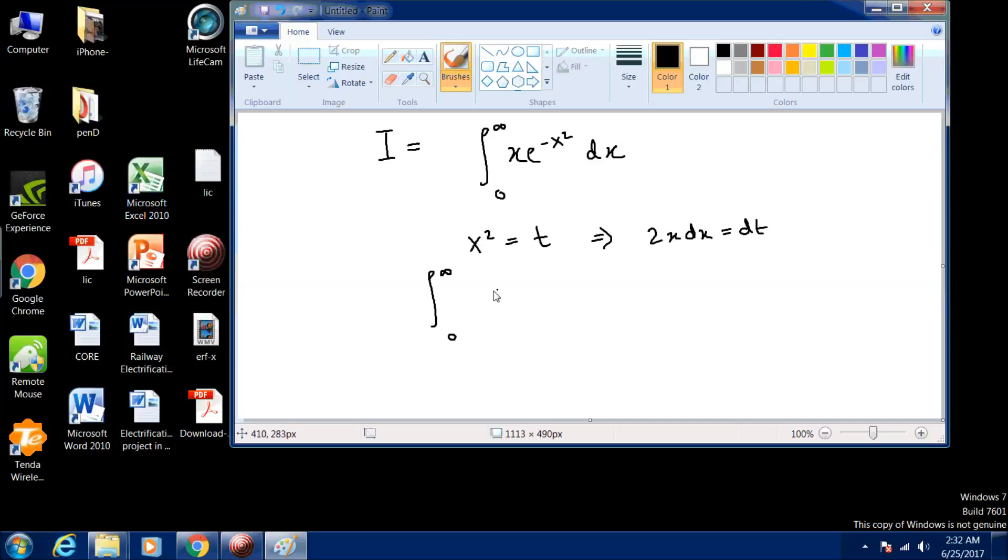Let's substitute here. x dx will be half dt. The half goes outside. This becomes e raised to the power minus t dt, which becomes minus e raised to the power minus t from 0 to infinity.